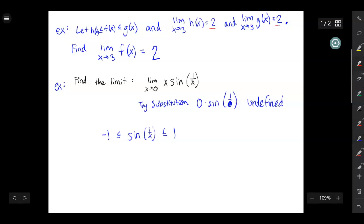So I'm going to multiply this whole inequality by x. So then that turns into negative x is less than or equal to x sine of 1 over x, which is less than or equal to x. So now you'll notice that I have my function right here, x sine of 1 over x, and it's sandwiched between two other functions. h of x is negative x, and g of x is x.